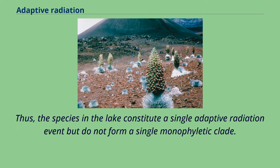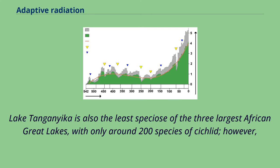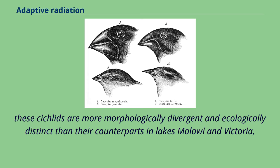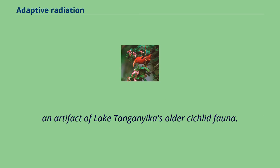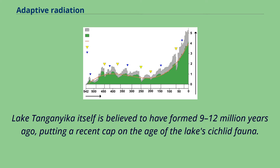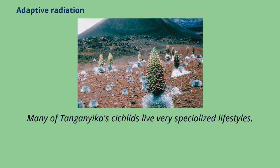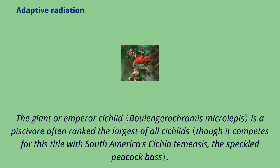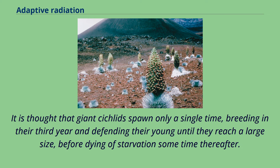Lake Tanganyika is also the least speciose of the three largest African great lakes, with only around 200 species of cichlid. However, these cichlids are more morphologically divergent and ecologically distinct than their counterparts in Lakes Malawi and Victoria — an artifact of Lake Tanganyika's older cichlid fauna. Lake Tanganyika itself is believed to have formed 9 to 12 million years ago, putting a recent cap on the age of the lake's cichlid fauna. Many of Tanganyika's cichlids live very specialized lifestyles. The giant or emperor cichlid is a piscivore often ranked the largest of all cichlids, thought to spawn only a single time, breeding in its third year and defending its young until they reach a large size before dying of starvation some time thereafter.